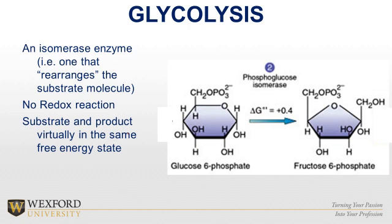The second step uses an isomerase — an enzyme that rearranges. All we're doing is taking glucose 6-phosphate and rearranging the ring: instead of a 6-member ring, it becomes a 5-member ring. The energy difference between these two forms is very small, so there would be a quick equilibrium. But fructose 6-phosphate is going to be driven to the next step by the next enzyme, pulling the reaction to the right.